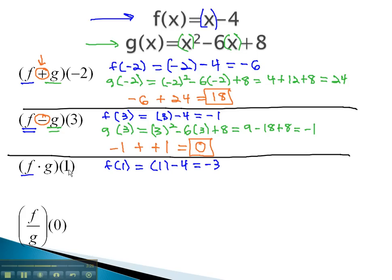And also, we're gonna plug 1 into the g function, giving us 1 squared, minus 6 times 1, plus 8, or 1 minus 6, plus 8, which is 3.